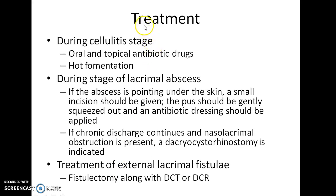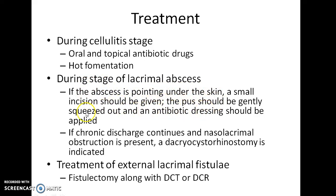Now how do you treat a case of Acute Dacryocystitis? During the cellulitis stage, oral and topical antibiotic drugs can be given, and hot fomentation can be done. During the stage of lacrimal abscess, if the abscess is pointing under the skin, a small incision should be given, the pus should be gently squeezed out, and an antibiotic dressing should be applied.